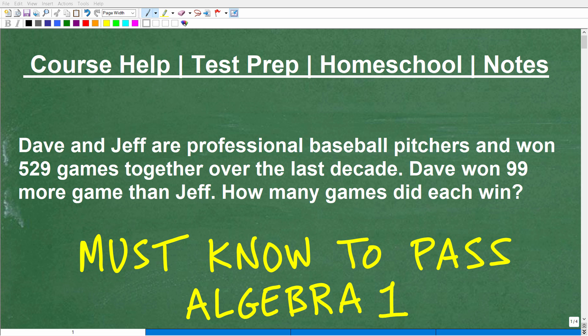But if you are in an algebra one level class, you absolutely need to know how to deal with word problems if you expect to pass. So this is actually not that difficult of a problem. Let me read it to you real quick. It says Dave and Jeff are professional baseball pitchers and won 529 games together over the last decade. Dave won 99 more games than Jeff. How many games did each win?